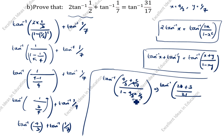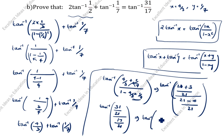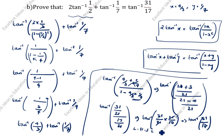So 21 minus 4 divided by 21. Next step: tan inverse of 28 plus 3 is 31, divided by 21, divided by 21 minus 4 is 17, divided by 21. So tan inverse of 31 divided by 17. You see LHS equals RHS. Hence proved. Thanks for watching this video.